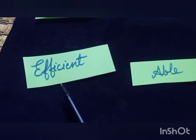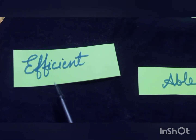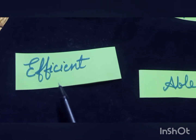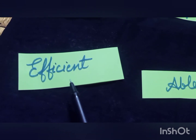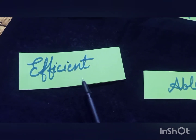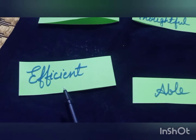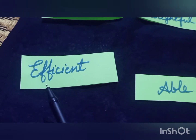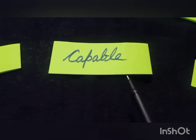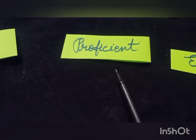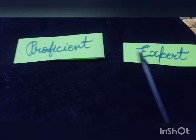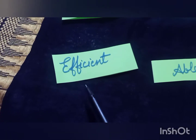The third word is 'efficient.' Efficient means a person who is capable of doing work without wasting energy and without making any mistake. The synonyms for efficient are able, capable, proficient, and expert.